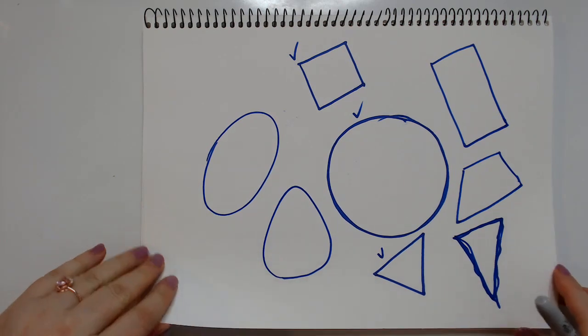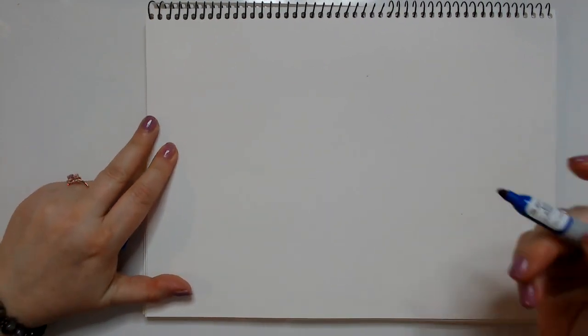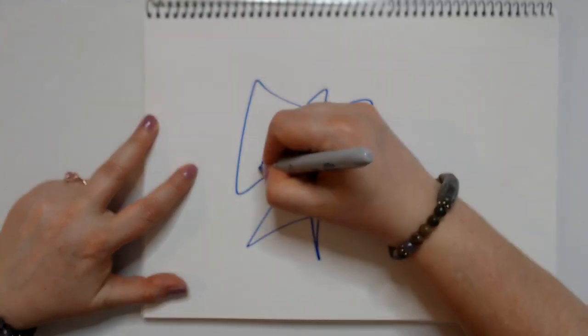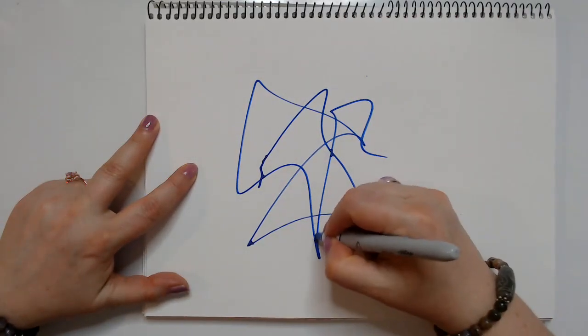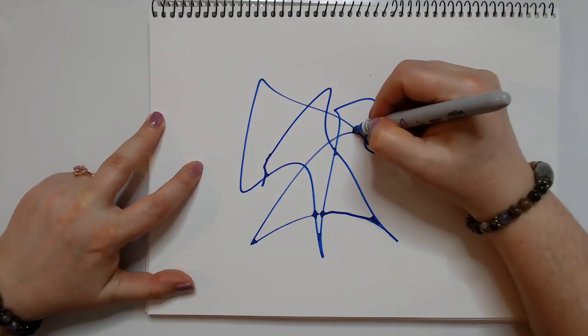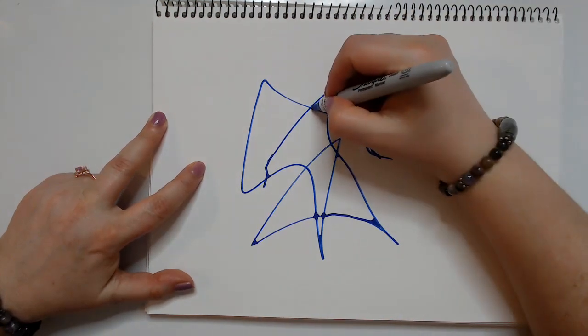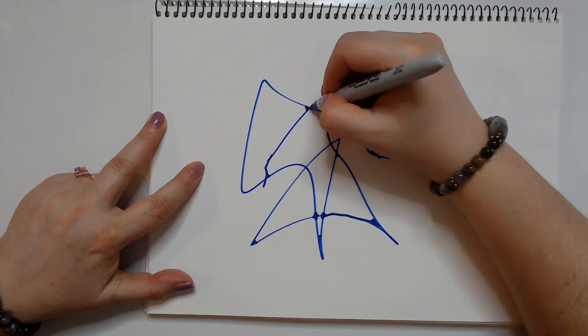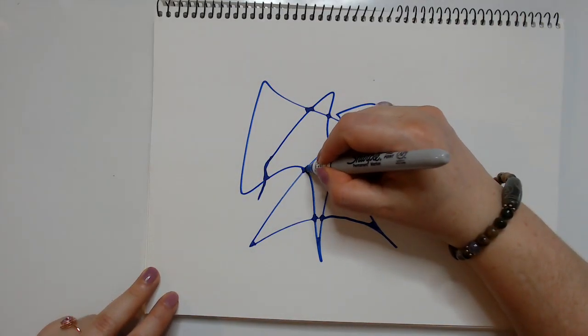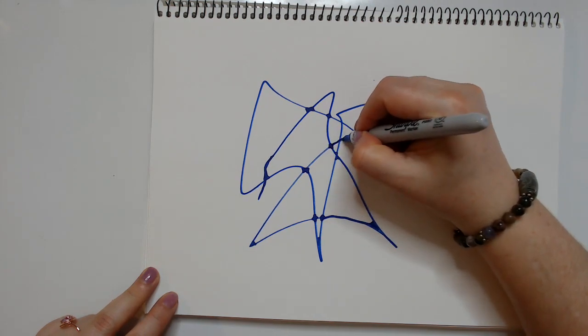So the next one is coloring. Now I want to show you two mistakes that people make when they color. Let's just pretend, right, you have your neurographic. You rounded, everything looks good. So you've done your rounding here. Let me just do basic rounding quickly so we have something to work from.